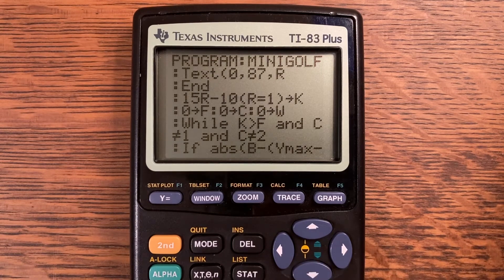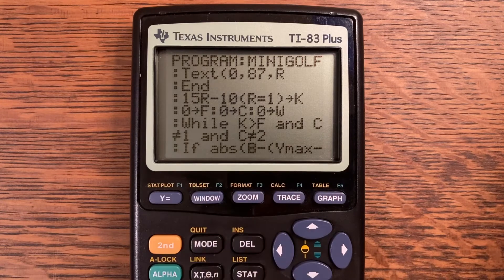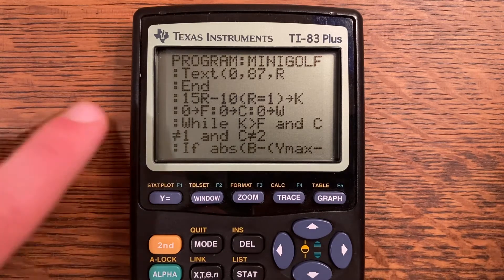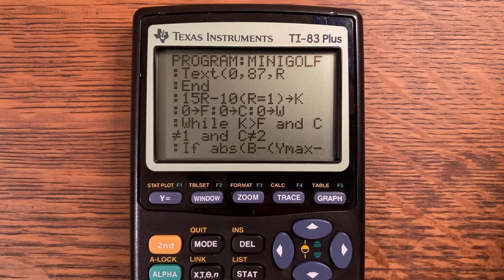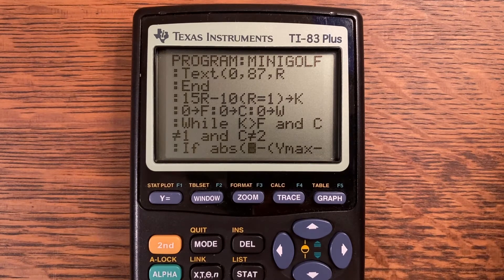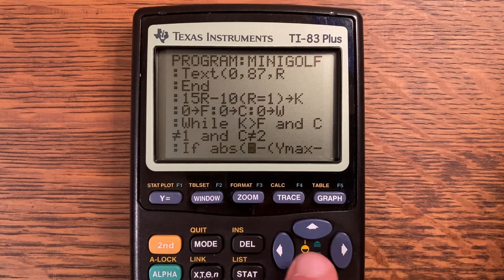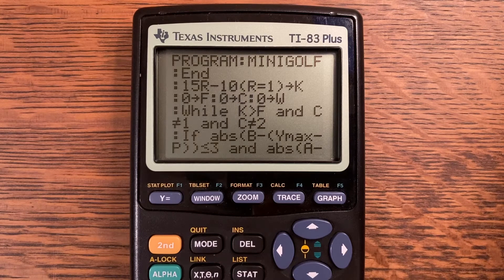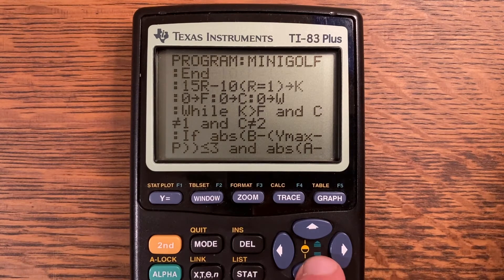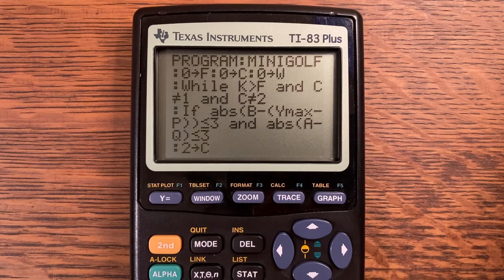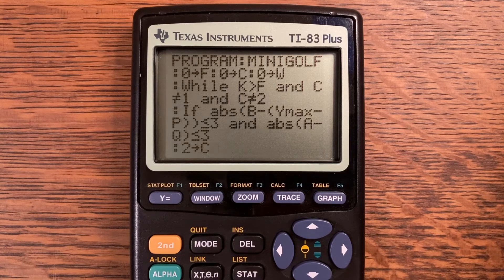Zero store into F. Zero store into C and zero store into W. While K is greater than F and C is not equal to 1 and C is not equal to 2, we're going to run all the code inside here. K is greater than F. K was the distance that we set, how far it would go. So while that is greater than the number of runs that the thing has gone through. So now we're getting into the part where it's Bresenham's line algorithm. There is a great Wikipedia page on this, so I will be putting that down in the description if you'd like to learn more. There's also some pretty good videos out there. I won't take very much time and explain how it works, just probably a brief description.